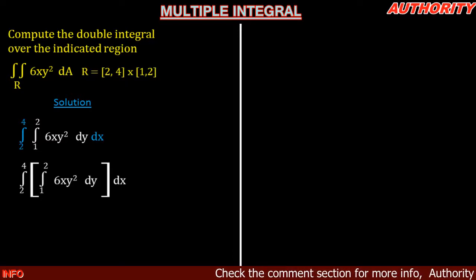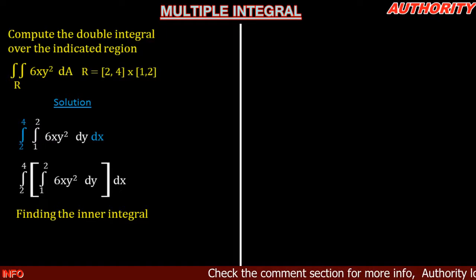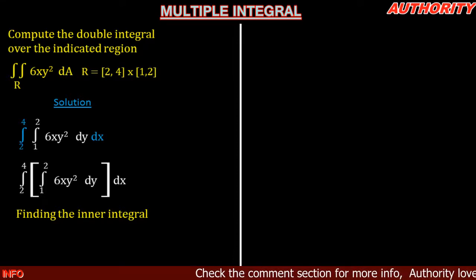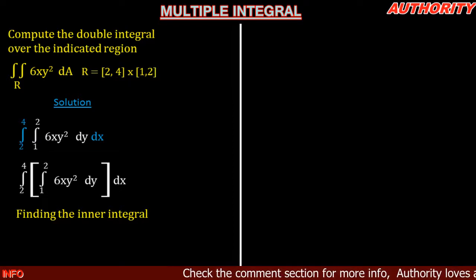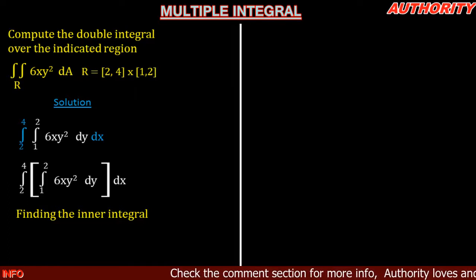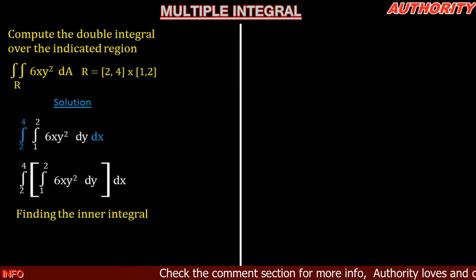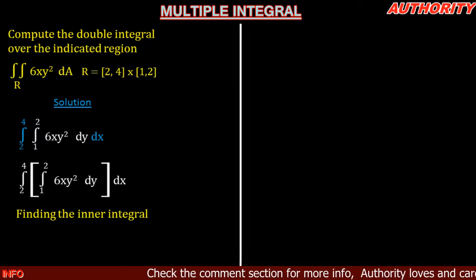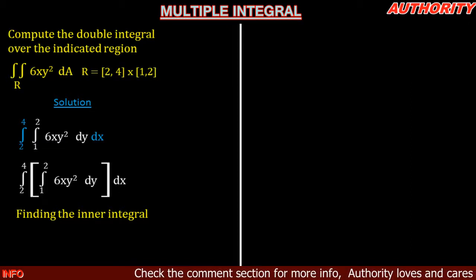I'm going to evaluate the inner integral first. The inner integral is: integral from 1 to 2 of 6xy² dy. Since this is a double integral, we integrate with respect to y and hold every other variable — in this case x — constant.